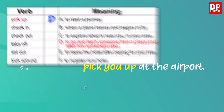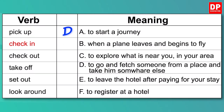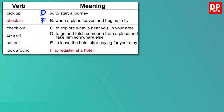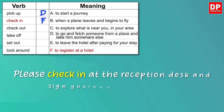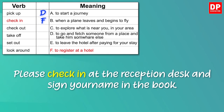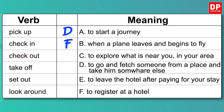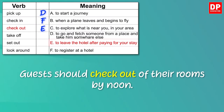Let's go to the second one — check-in. Check-in means to register at a hotel. For example: Please check in at the reception desk and sign your name in the book. Now the third one — check-out. Yes, it's the opposite of check-in. Check-out means to leave and pay for your stay at a hotel. For example: Kids should check out of their rooms by noon.